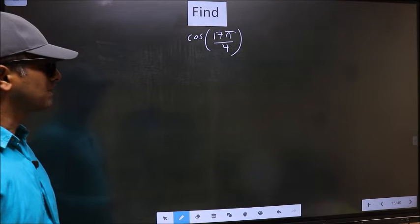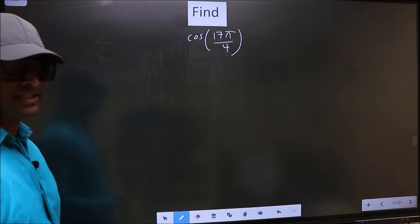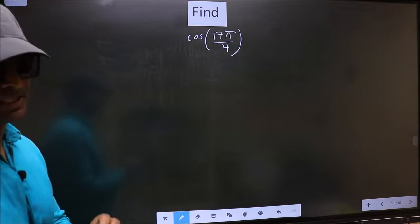Find cos 17 pi by 4. To find this, we should follow this method. See.